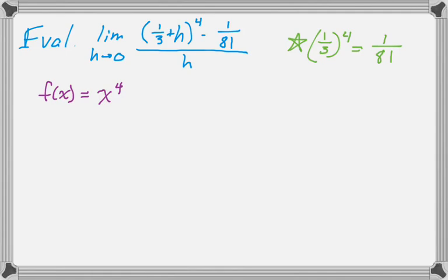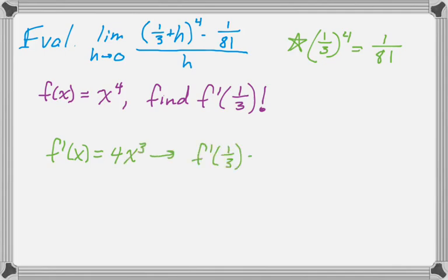So f of x is x to the fourth. In this case, f of a, if I plugged it in, I'd get 1 over 81. So this is exactly the form of the derivative. So I'm going to find f prime of 1 third. And f prime of x is 4x cubed. So f prime of 1 third is 4 times 1 third cubed, which is 4 over 27.